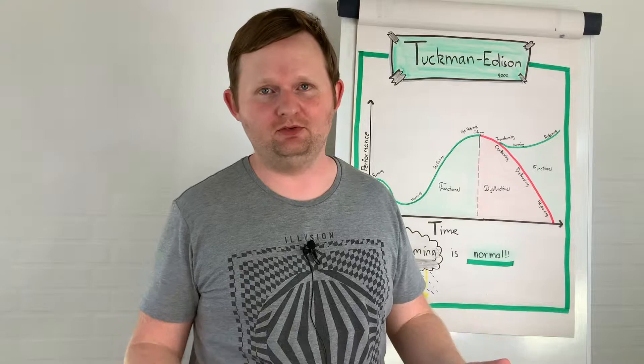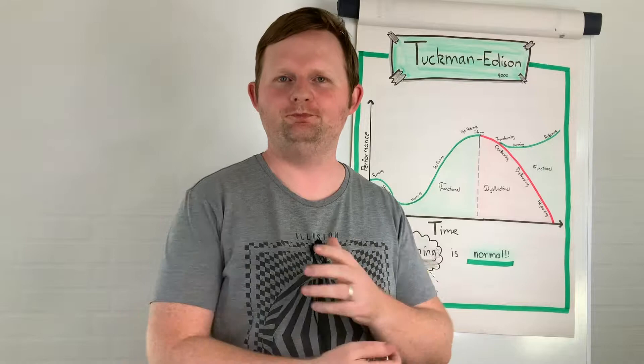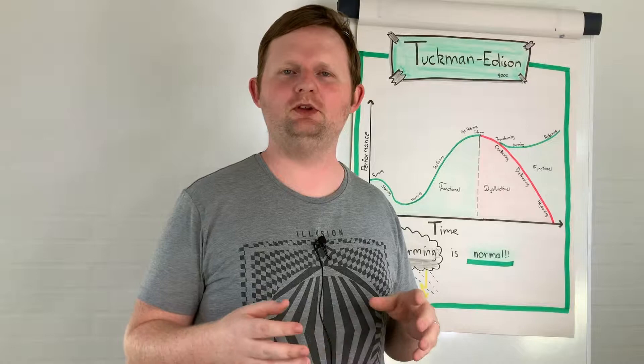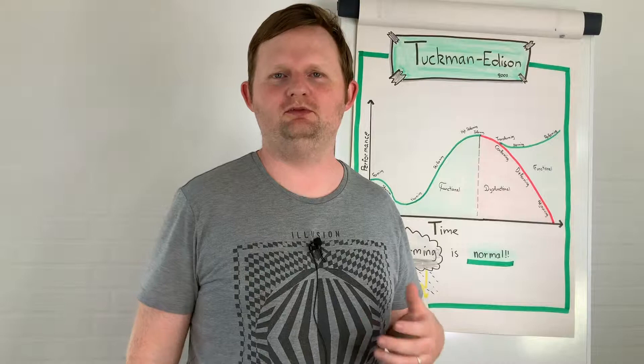In Agile, we strive towards stable teams. The reason for this is when we look in literature and academia, and also just from experience, stable teams simply just perform better. We can see why in this Tuckman model. The Tuckman model is a quite well-known model which describes several phases that a team must go through in order to become high performance.